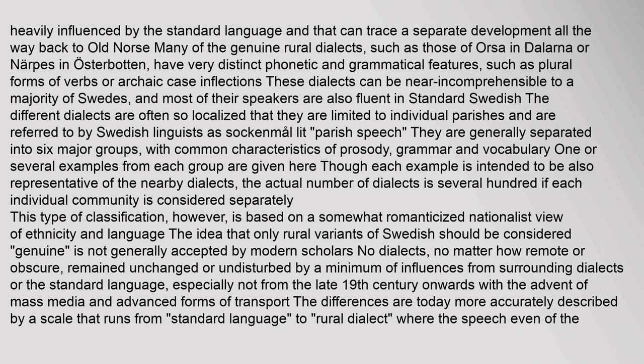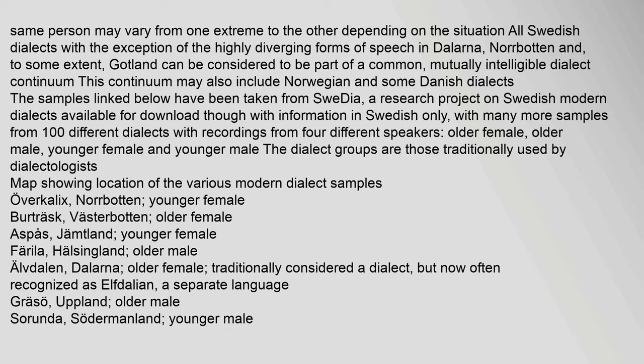This type of classification, however, is based on a somewhat romanticized nationalist view of ethnicity and language. The idea that only rural variants of Swedish should be considered genuine is not generally accepted by modern scholars. No dialects, no matter how remote or obscure, remained unchanged or undisturbed by influences from surrounding dialects or the standard language, especially not from the late 19th century onwards with the advent of mass media and advanced forms of transport. The differences are today more accurately described by a scale that runs from standard language to rural dialect, where the speech of the same person may vary from one extreme to the other depending on the situation. All Swedish dialects — with the exception of the highly diverging forms of speech in Dalarna, Norbotten and, to some extent, Gotland — can be considered part of a common, mutually intelligible dialect continuum.